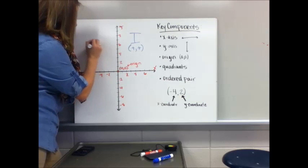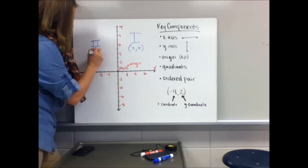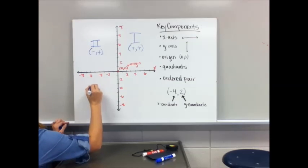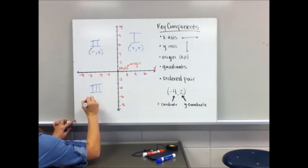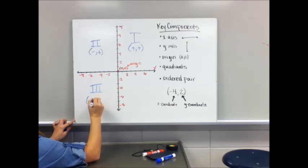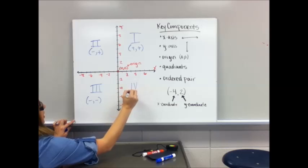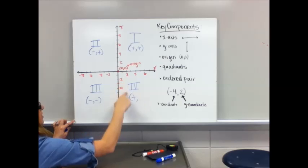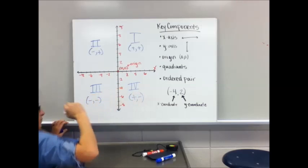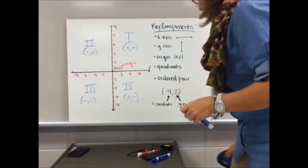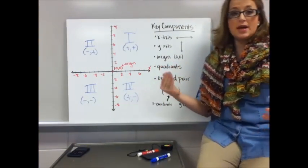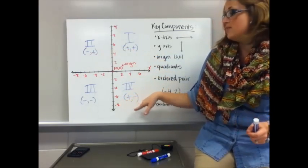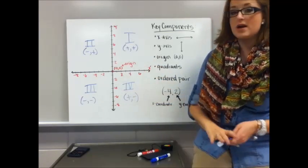In quadrant two, your x values are negative, your y values are positive. If a coordinate falls in quadrant three, both your x coordinate and your y coordinate are negative. And quadrant four, your x is positive, your y's are negative. Having this diagram nearby will be very helpful to you because you can check to make sure that you have graphed a point in the correct quadrant by looking to see what its signs are.